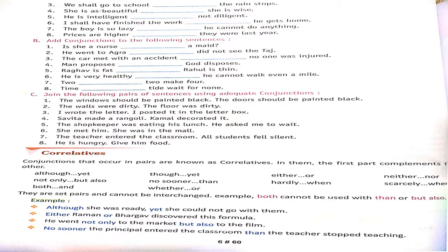Now, question number B is on your screen. You have to add the conjunctions like you did in the previous question. First one is: Is she a nurse or a maid? When you have two options, you use 'or'.